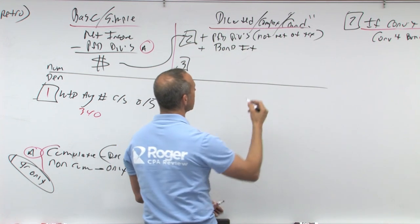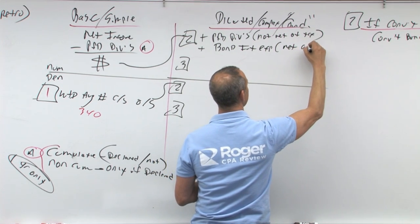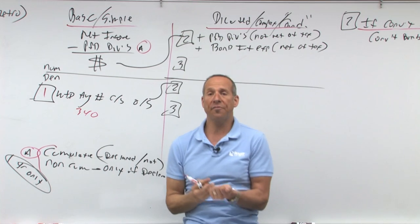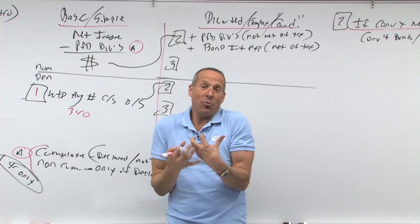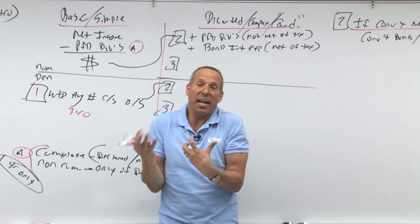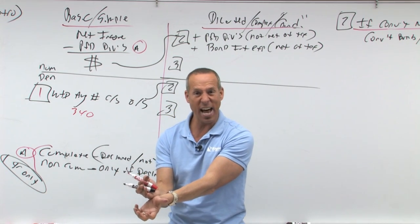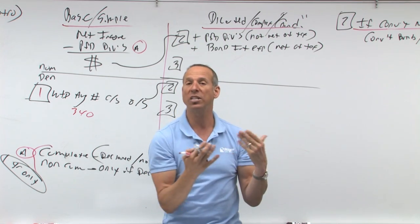Or bond interest. So the bond interest would be the interest expense. The bond interest expense, that would be added in net of tax. Why? Because if you converted, I wouldn't have to pay you bond interest. That means I would have extra money, but that money would get taxed, so I would have that net of tax to give away. But the preferred dividend came out of after-tax. If you convert, I got that extra 200 grand, I can just give it away. So that one's not net of tax.